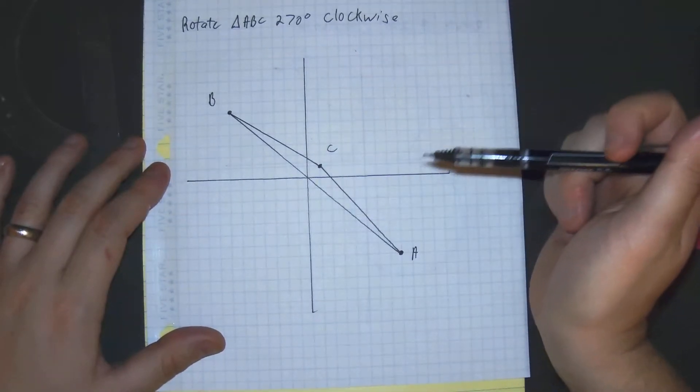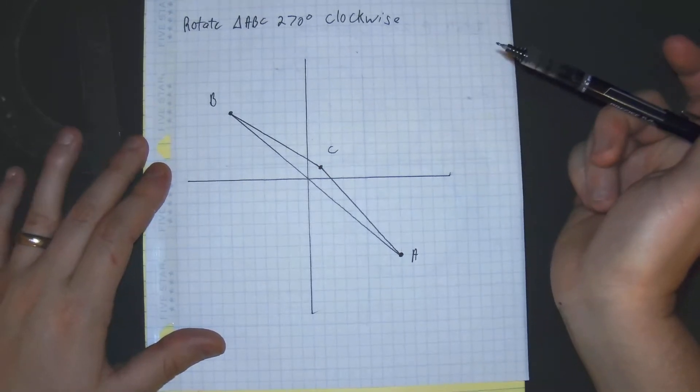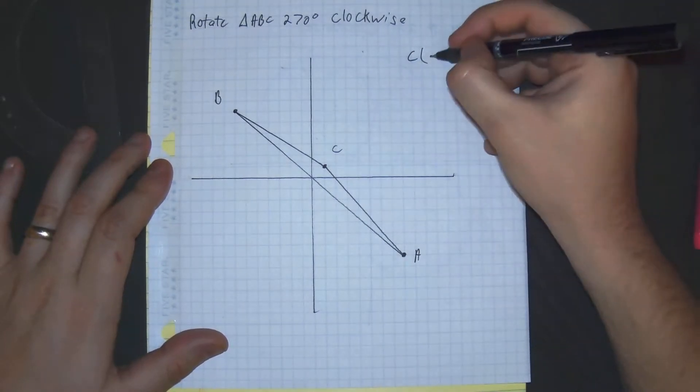So the first thing we need to do is let's gather all of our points, make it simple on us. Let's first get our C. C seems the easiest. C should be at 1, 1.